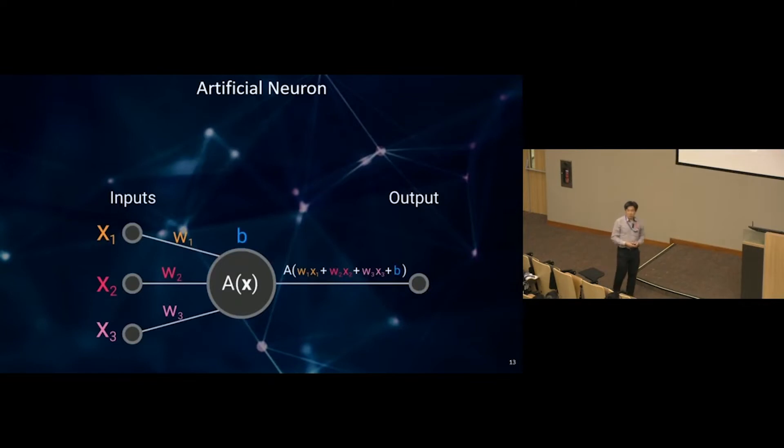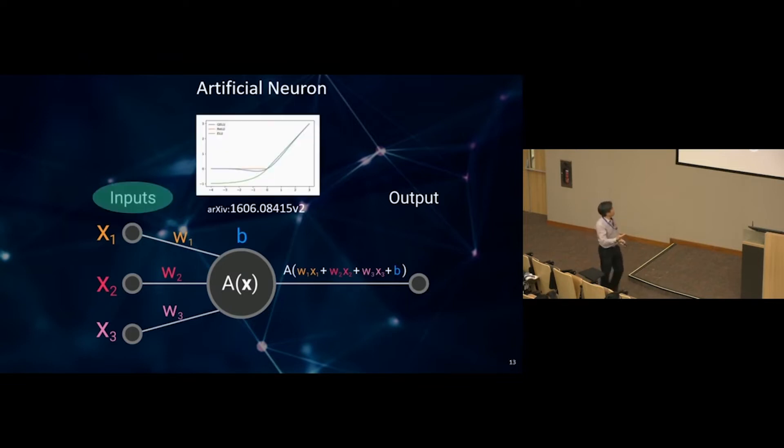An artificial neuron is similarly constructed. We can have many inputs, put them into a processor with an activation function. It is this non-linearity of the activation function that makes it so powerful. There are three types of activation functions. What we discovered is that the blue activation function is the most efficient. I do not understand why, that's just how it is. Then you have an output to connect to subsequent neurons.